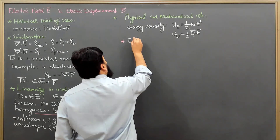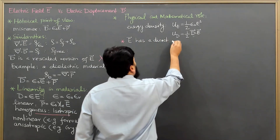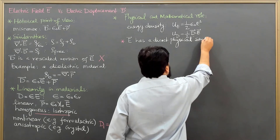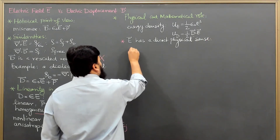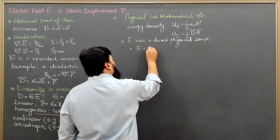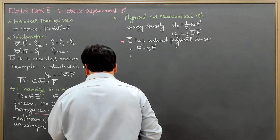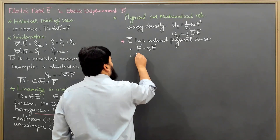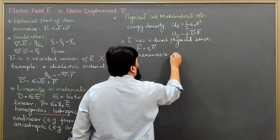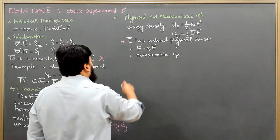E has a direct physical sense. I can say that it exerts a force — F equals QE. The second thing is that E is directly measurable. We can measure it on a test charge.